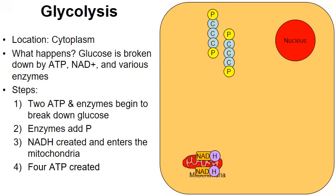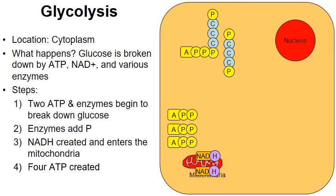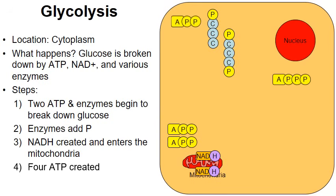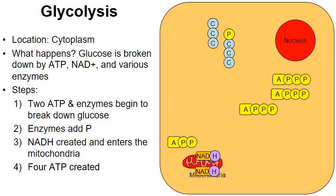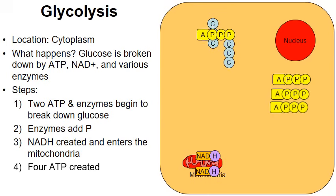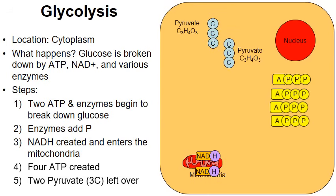Near the end of glycolysis, four molecules of ATP are created. Four molecules of ADP each combine with a phosphate group, with the help of an enzyme, to create ATP — this happens four times. What was once glucose is now two molecules called pyruvates, which will be useful in the Krebs cycle. A total of four ATP molecules are created, though this is often referred to as a net gain of two ATPs.